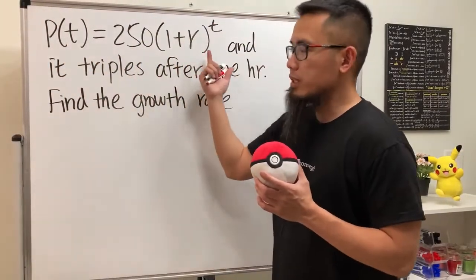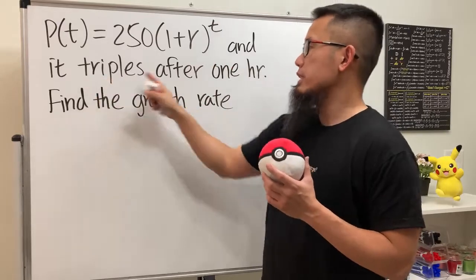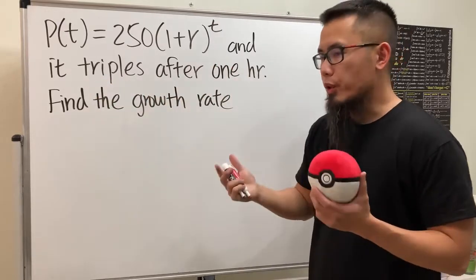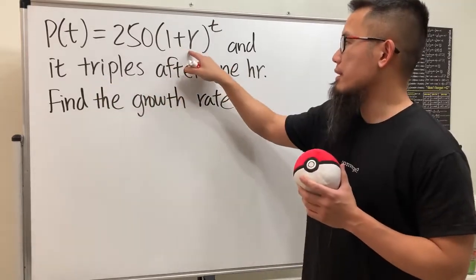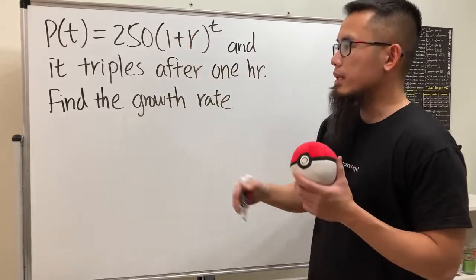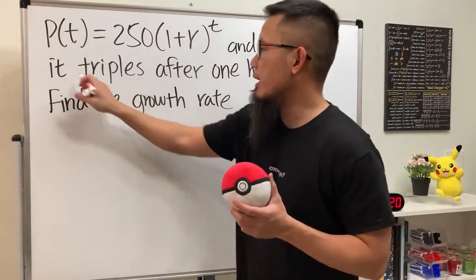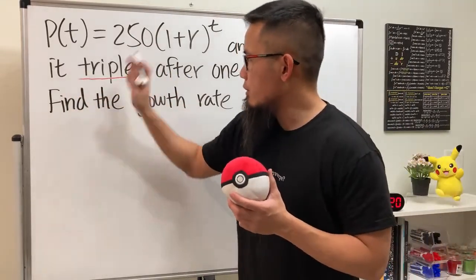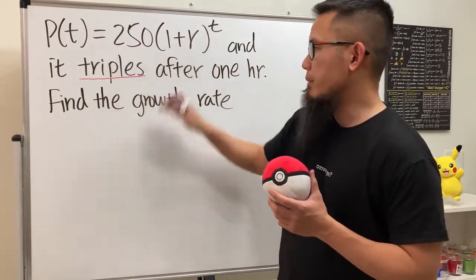Here we're given this exponential growth equation P(t) = 250(1+r)^t and it says it triples after one hour. When we have 1+r, this is the growth factor. When it says it triples, here's the key: triple means you don't need to know the initial amount, you just need to know the base.